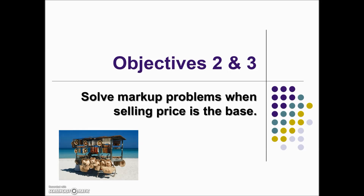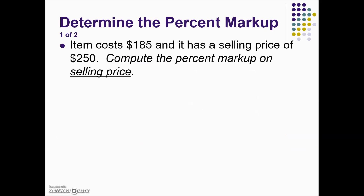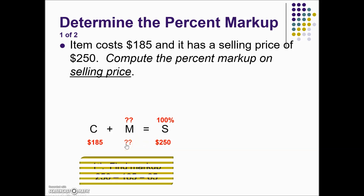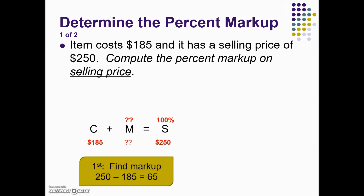Let's take a look at calculating some markup based on selling price problems. In this first example, an item costs $185 and has a selling price of $250. Compute the percent markup on selling price. Because the markup is on selling price, that dictates where the base — the 100% — is going. We are asked to find the markup rate, so we plug in cost of $185 and selling price of $250. Since we know two of the three values, we can calculate the markup by subtracting the cost from the selling price.